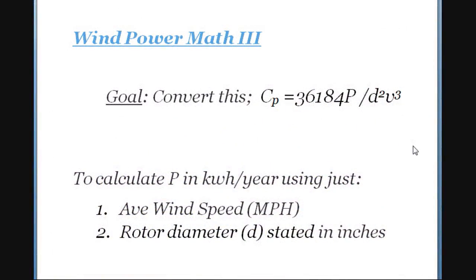What I thought I would do is a follow-on to Wind Power Math Number 2 and come up with Wind Power Math Number 3, which takes the formula we just derived — calculating the coefficient of performance based on rated power in watts from the datasheet, the diameter of the rotor in inches, and the rated wind speed in miles per hour. I wanted to take that basic formula and come up with one that's more practical.